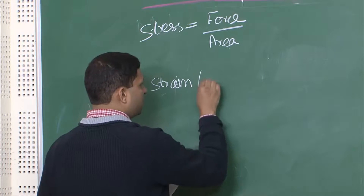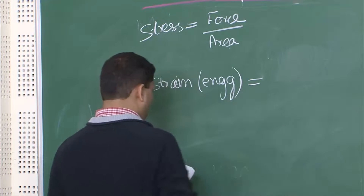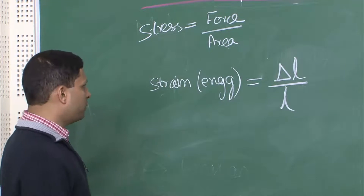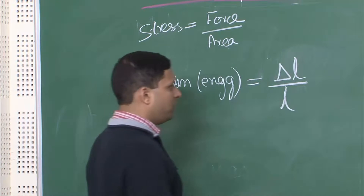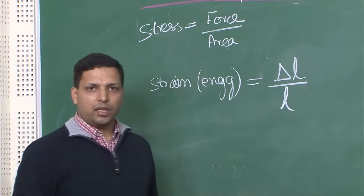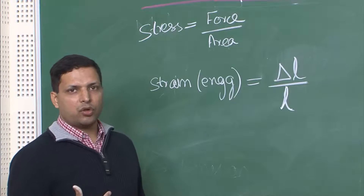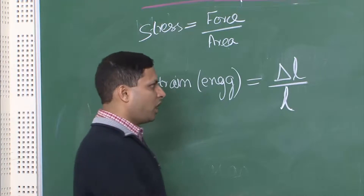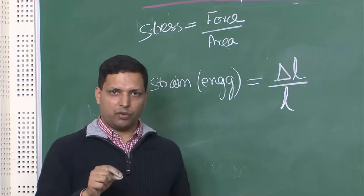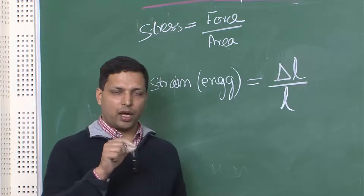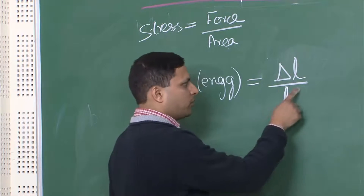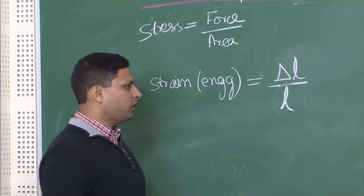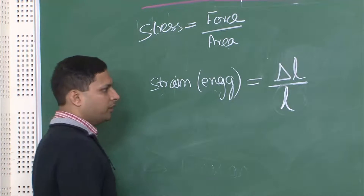Engineering strain uses the original length at the beginning of deformation. However, at each and every instant during deformation, the length is also changing. Therefore, the strain value at a particular instant would also be different because you use a different L value. This leads us to two different definitions: engineering strain and true strain.